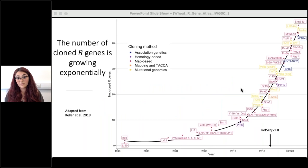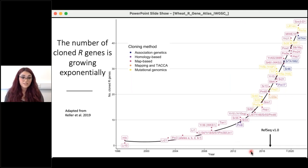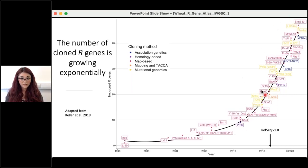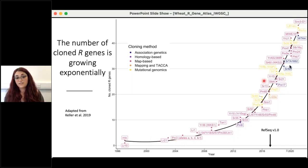The rate at which these genes have been cloned has been increasing exponentially over the last couple of decades, driven by new resources like the reference genome sequence and advances in technologies such as mutational genomics. Association genetics is also playing more of a role, though map-based cloning still accounts for most cloned resistance genes in wheat and provides the basis for these newer technologies.